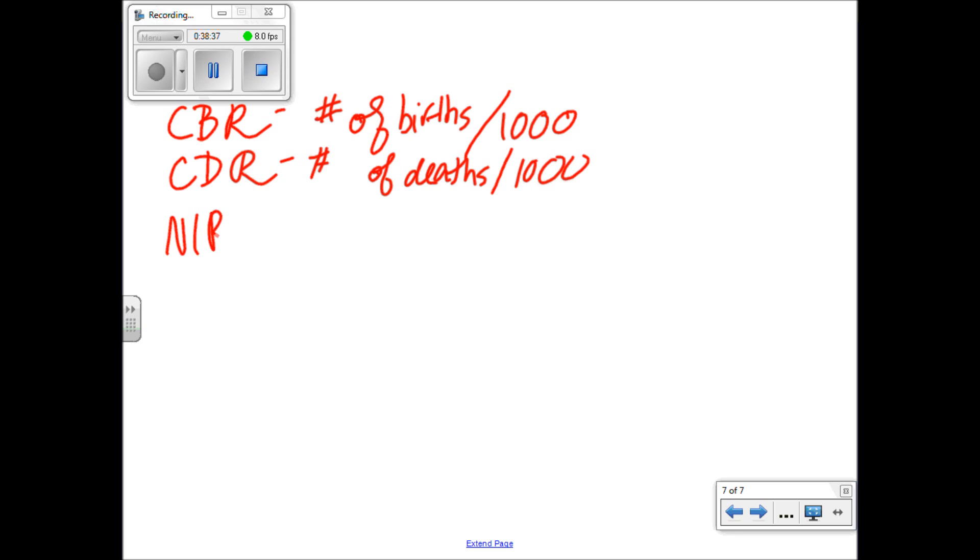Another big one to think about is natural increase rate. You will take your CBR and you will subtract your CDR and you will get your NIR. Keep in mind that if your CBR is astronomically high, say a 20, and your CDR is 5, when you subtract those you're going to have 15. The NIR can never be 15. The NIR is typically going to be something under 3 or 4. If you have a NIR higher than 4, you're in trouble. So really, when you consider this, you need to move the decimal, it's going to be a 1.5, which is still pretty high.